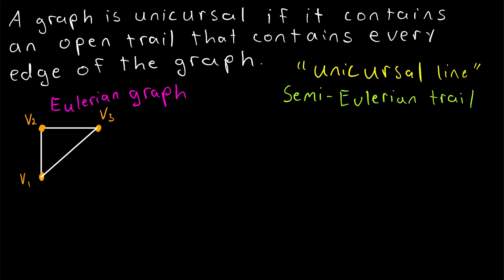We can easily characterize which graphs are unicursal. We begin by remembering our characterization of Eulerian graphs: a connected graph is Eulerian, meaning it contains an Eulerian circuit, if and only if all of its vertices have an even degree. I'll leave a link in the description to my lesson proving that theorem, which I definitely recommend checking out, especially since we will use that result to characterize unicursal graphs.